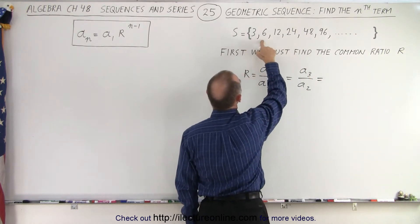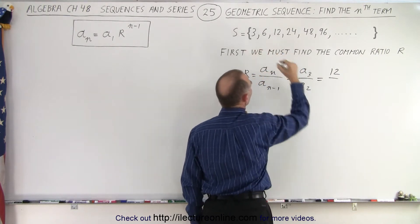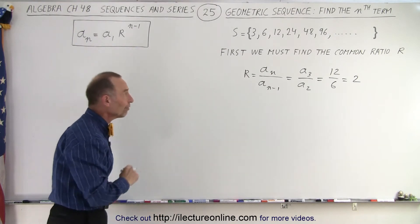So a sub 3 is the third number, 1, 2, 3, that's equal to 12, and the second one is 1, 2, that's equal to 6, and you can see that that ratio is indeed equal to 2. That's how we find the ratio.